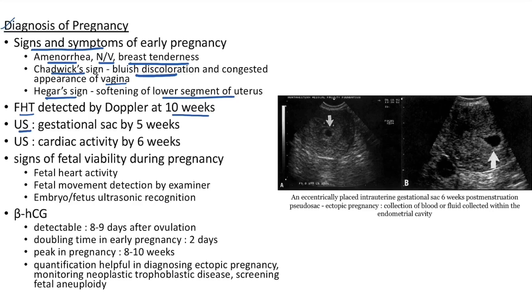Ultrasound can detect gestational sac by 5 weeks and cardiac activity by 6 weeks. This picture shows an eccentrically placed intrauterine gestational sac at around 6 weeks post conception. This picture shows a pseudo sac — a pseudo sac will be seen in ectopic pregnancy; it is basically a collection of blood or fluid within the endometrial cavity.